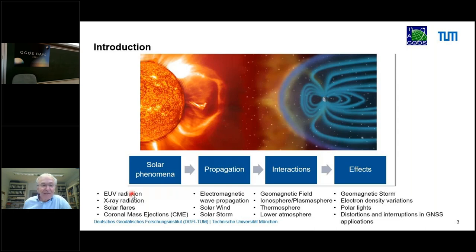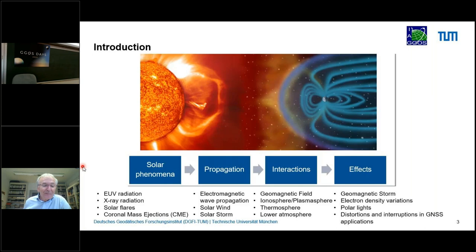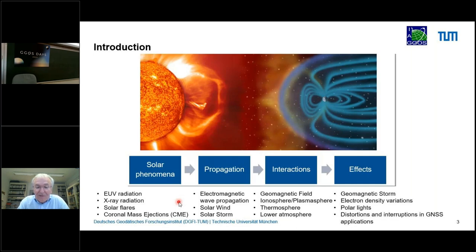In this figure we have the sun on the left and the Earth with its geomagnetic field on the right. We discuss solar phenomena, then propagation, interactions with different properties of the Earth, and finally the effects. Solar phenomena include EUV radiation, X-ray radiation, solar flares, and CMEs. Propagation is either by electromagnetic wave or by particle propagation in the form of solar wind and solar storms. Interactions with the geomagnetic field, ionosphere, plasmasphere, thermosphere, and lower atmosphere are all discussed, with effects including geomagnetic storms, density variations, and polar lights.